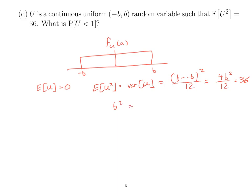So B² is equal to 3 times 36, which implies B equals 6 times the square root of 3.